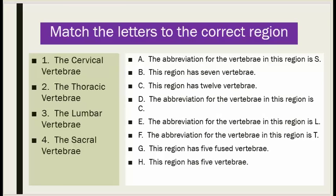Match the letters to the correct region. The regions are: number one, the cervical vertebrae; number two, the thoracic vertebrae; number three, the lumbar vertebrae; number four, the sacral vertebrae. A: the abbreviation for the vertebrae in this region is S.